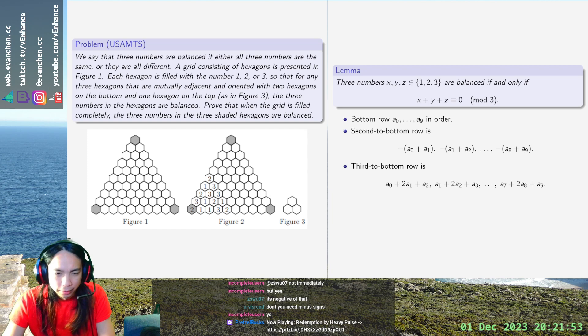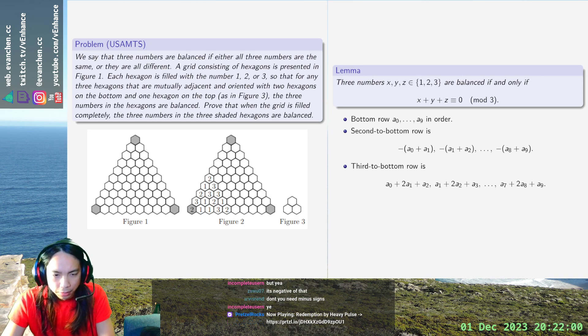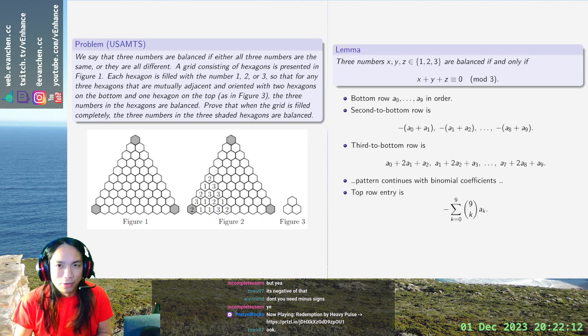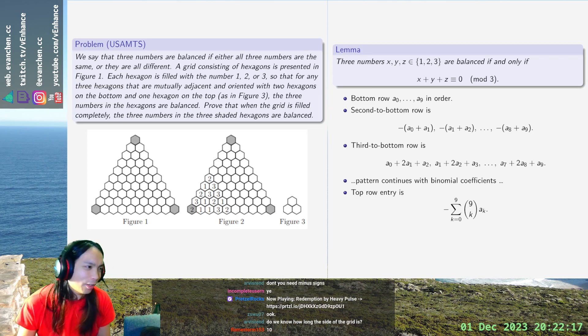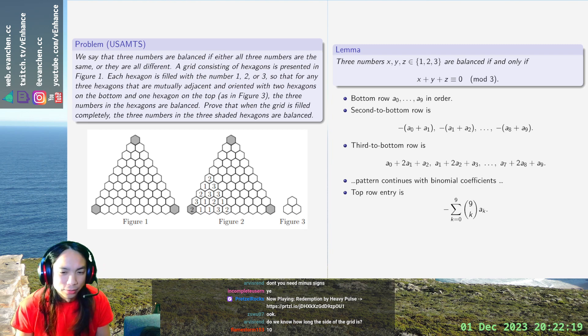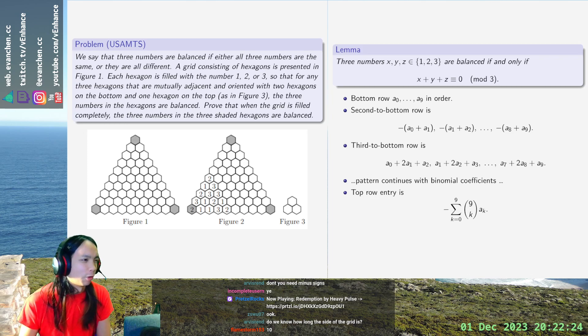And finally, the 10th, the top row entry will be given exactly by the sum of 9 choose k, from k equals 0 to 9, negated of a sub k. And 9 choose k is divisible by 3 for every k. You can check this either, if you want to just compute it by hand, you could. It also follows from, I don't know, in general, if your total binomial coefficient is a prime power, everything's divisible by that prime.